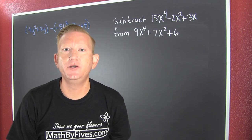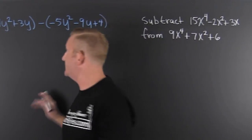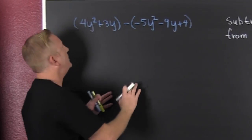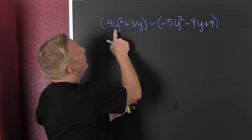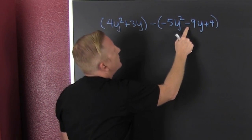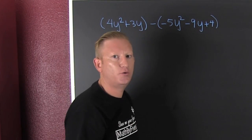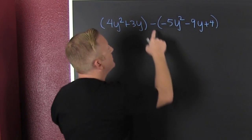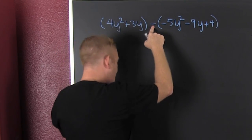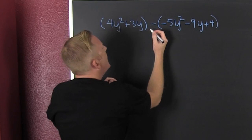Adding and subtracting polynomials - this video is mostly about subtraction. Let's get to our first problem. We have (4y² + 3y) minus (-5y² - 9y + 4). First thing we take care of is that minus sign because here we're subtracting polynomials.